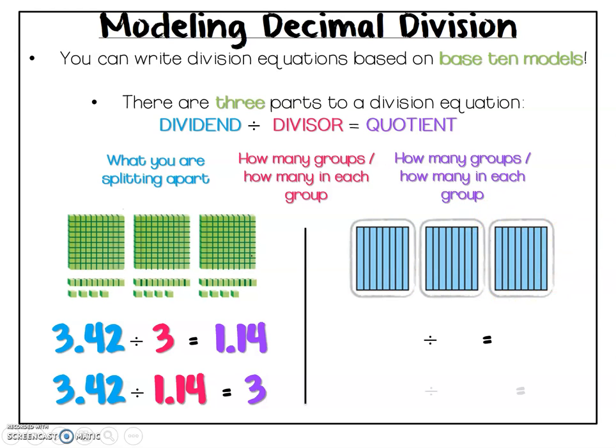Again, I can write two different equations. So the first one that jumps out at me uses a divisor of three. And in each group, I see eight skinny rods, which tells me that I have eight tenths. If I combined together all of those tenths and did my regrouping, my dividend would be that I was splitting apart the two and four tenths.